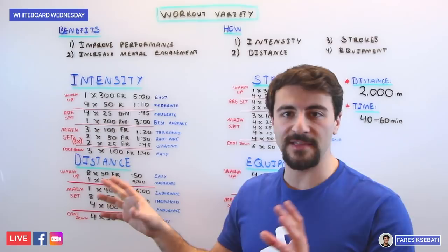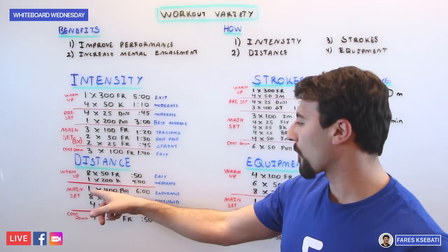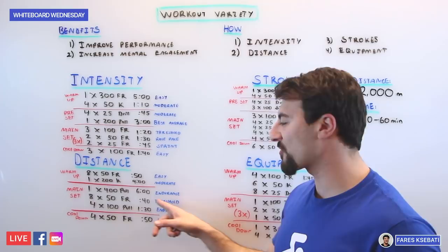If we look at the main set, we're going to go three different sets and each one is 400 meters. We're going to go a 400 pull on six minutes, that's endurance, followed by 8x50s free threshold on the :40, that's a short rest really maximizing your aerobic threshold, and then you're going 4x100s pull again, endurance.